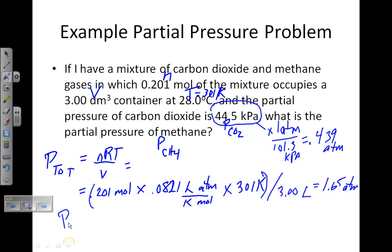To get the partial pressure of methane, take the total pressure minus the pressure of CO2, or 1.65 minus 0.439, and you'll get 1.21 atmospheres. That is the answer. If you convert that back into kilopascals, you'll get 123 kilopascals.